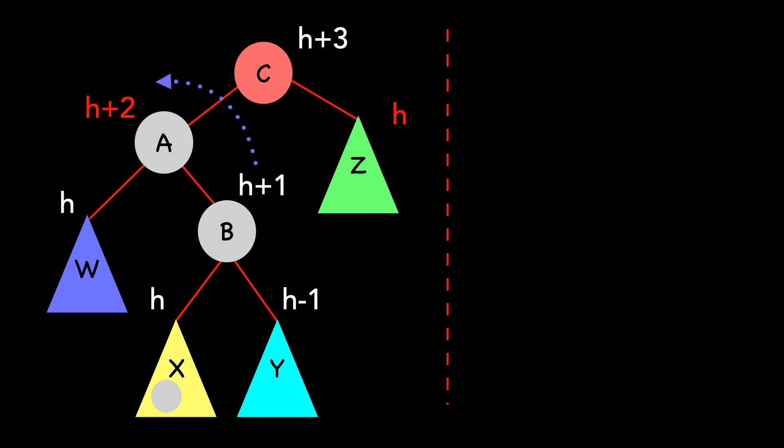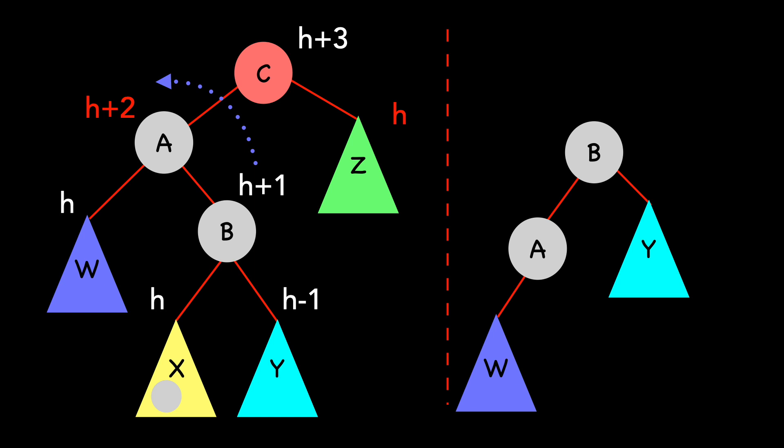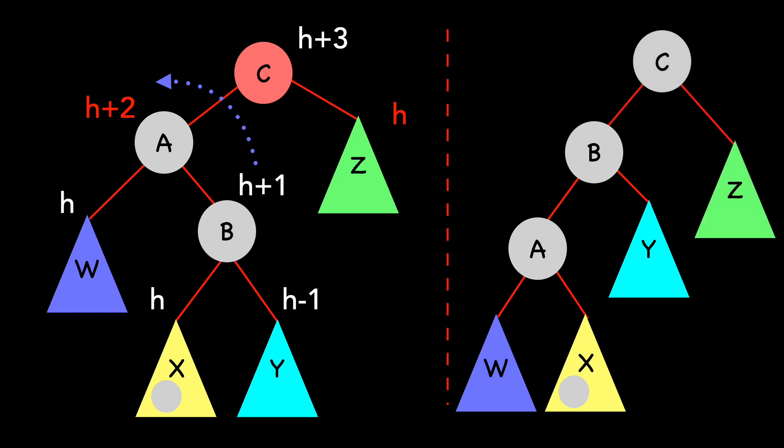We start with the left rotation on A. We make A the left child of B, and X the right child of A. We fill in C and Z. We then fill in our height values, again starting from the bottom. And then we calculate the heights of the remaining nodes, adding 1 to the greater of the two heights between the children.